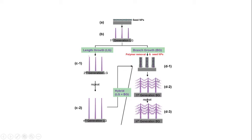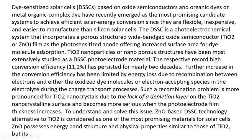These branches are again divided into sub-branches, and red envelope particles are grown on them. By increasing branches in this way through the hydrothermal process, we can get a high-efficiency solar cell.